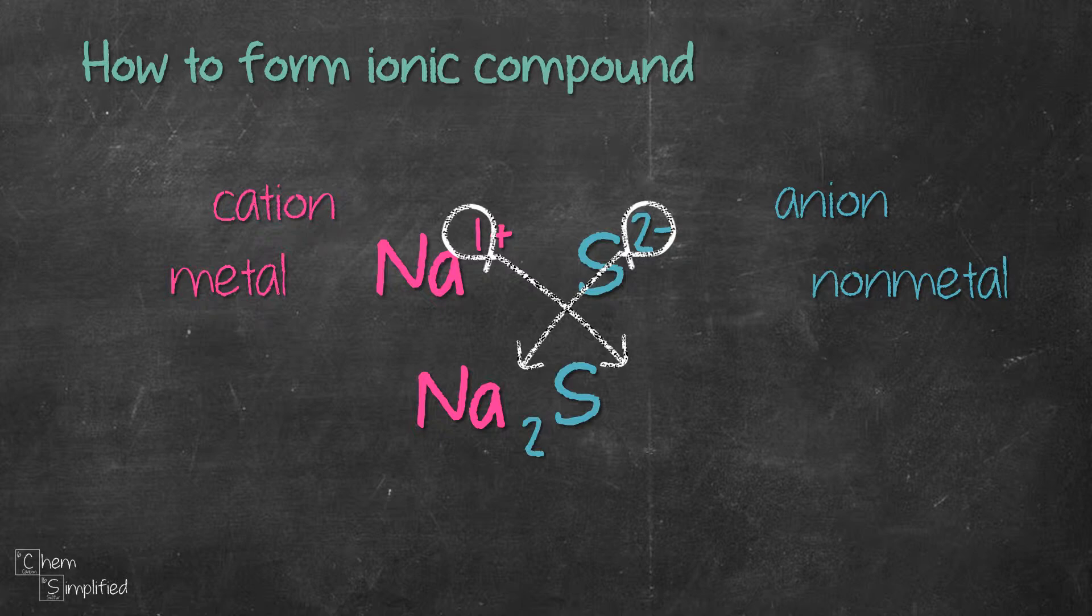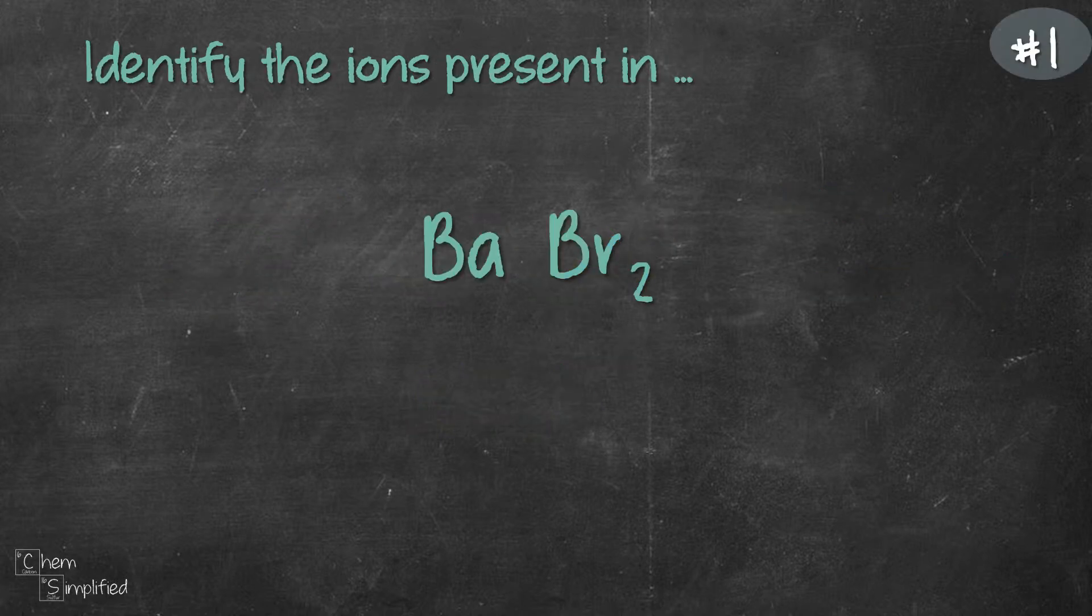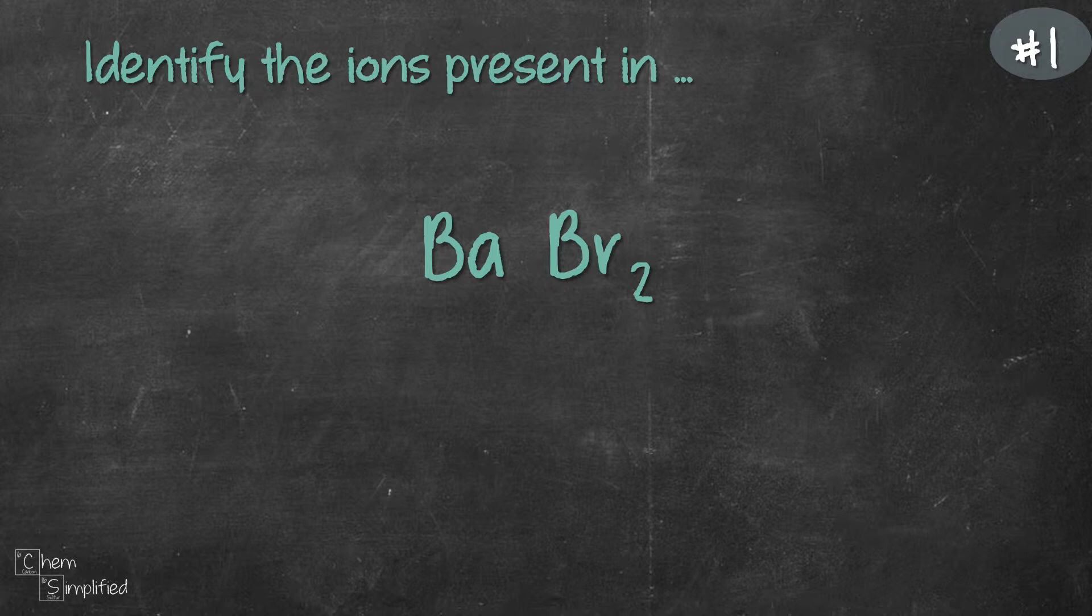Now that we know how to use the crossover method, let's try to figure out the ions that are present in BaBr2. This compound is soluble in water, therefore it will break into cation and anion. In fact, all five examples we're going to look at are soluble in water.